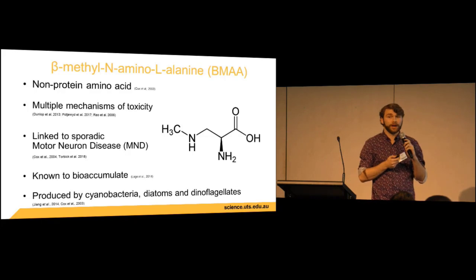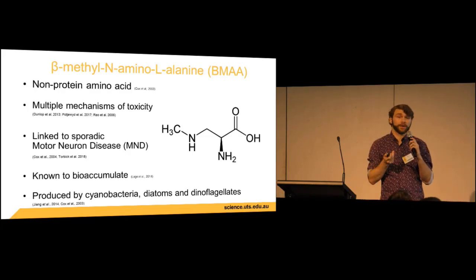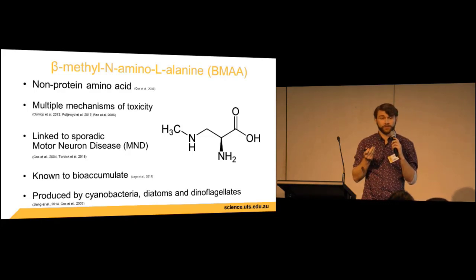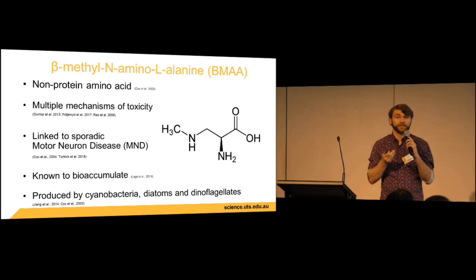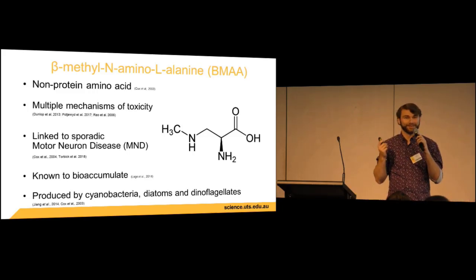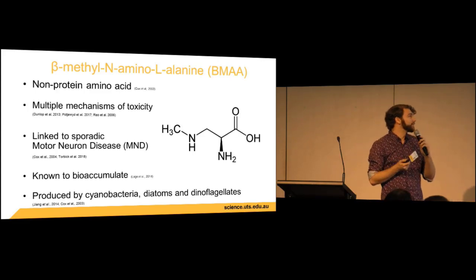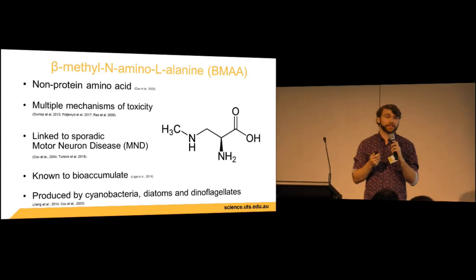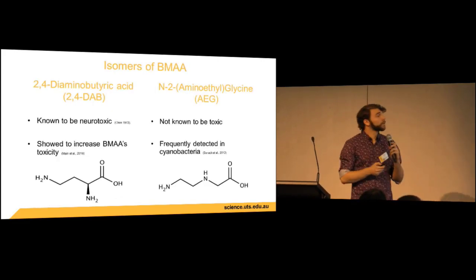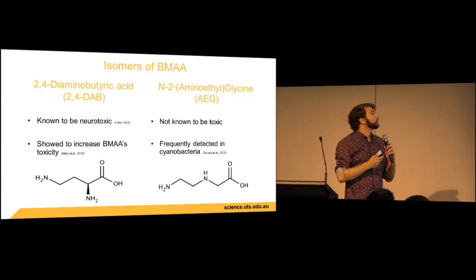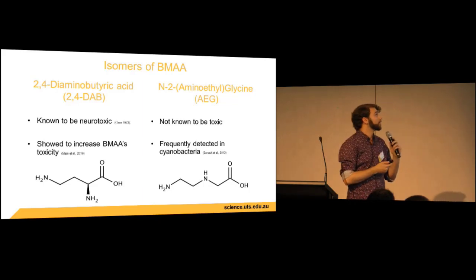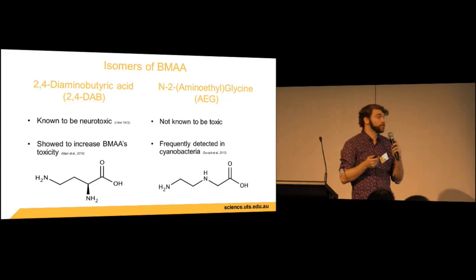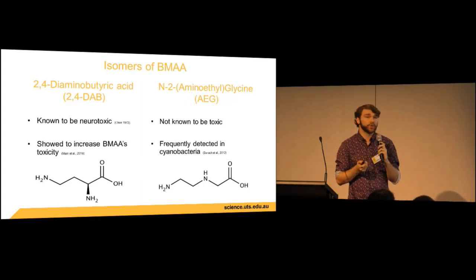BMAA is also known to bioaccumulate through several different types of food webs including terrestrial and aquatic — such as the terrestrial one on Guam where it went from symbiotic cyanobacteria living in tree roots up into seeds and then into bats, and in aquatic food webs such as in southern Florida where it went from algae into crustaceans and fish. BMAA is also known to be produced not only by cyanobacteria but also by eukaryotic diatoms and dinoflagellates. BMAA is commonly found alongside its two isomers: 2,4-diaminobutyric acid (2,4-DAB) and N-(2-aminoethyl)glycine (AEG), which are also non-protein amino acids and constitutional isomers of BMAA.